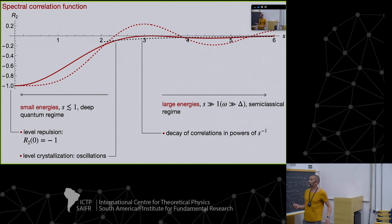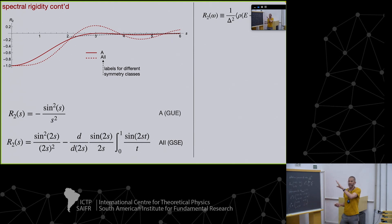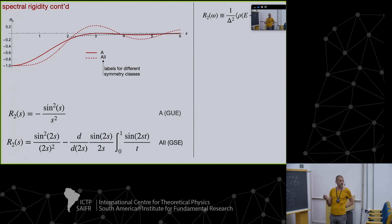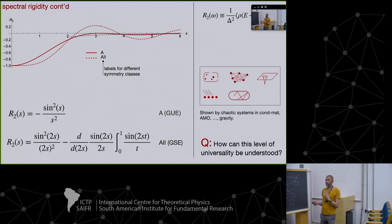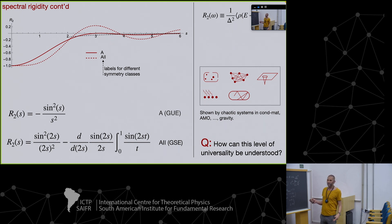These are the objects statistically describing the spectrum. You can make this quantitative by different methods — for some classes of microscopic systems or by using random matrix techniques — and compute these functions in various symmetry classes. What I want to stress is an ultra-high level of universality: this behavior is shown by all quantum systems that are ergodic, just distinguishing the symmetry classes, no matter whether they are condensed matter systems, AMO systems, billiards, or indeed gravity.